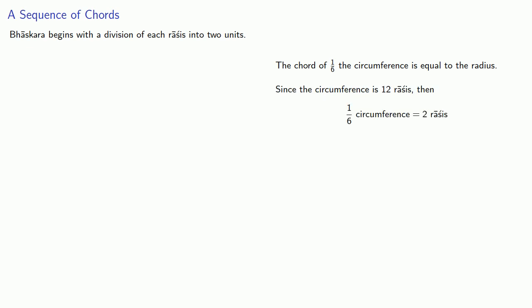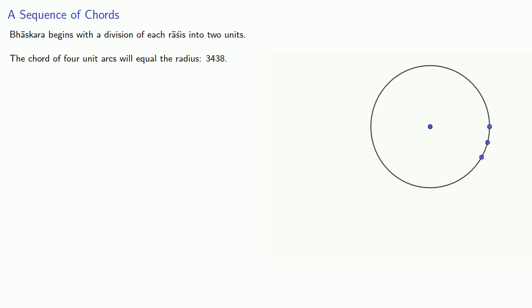Since the circumference itself is twelve racis, then one-sixth of the circumference is two racis. And since each racis is two units, then two racis is four-unit arcs. And so that means the chord of four-unit arcs will equal the radius, 3438. So we'll mark out that chord of four-unit arcs in the central angle.